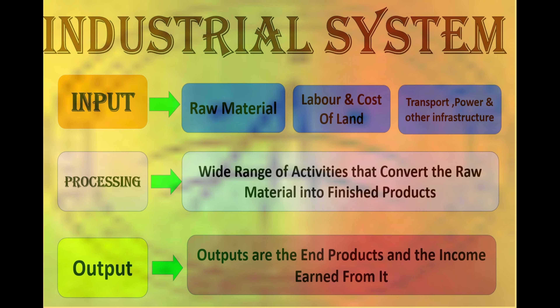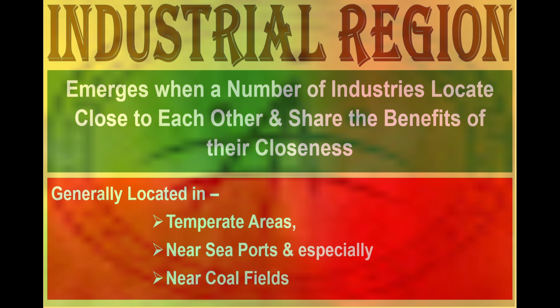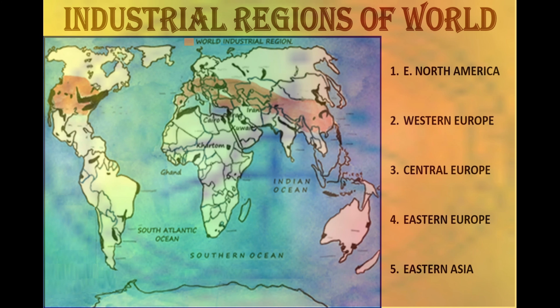Output involves end products and income earned from the industries. Any industrial region emerges when a number of industries locate close to each other and share the benefits of closeness. Generally industries locate in temperate areas, near seaports, and especially near the coal fields. There are in all five industrial regions of the world: East North America, West Europe, Central Europe, Eastern Europe, and Eastern Asia.